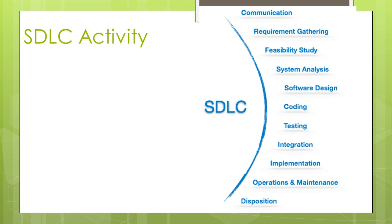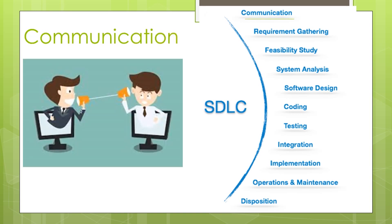This diagram shows the SDLC activity. SDLC provides a series of steps to be followed to design and develop a software product efficiently. The SDLC framework includes the following steps. First is communication — this is the first step where the user initiates the request for a desired software product.